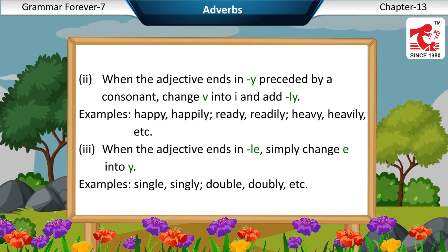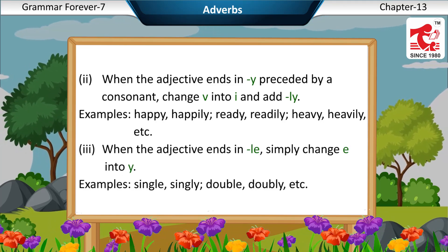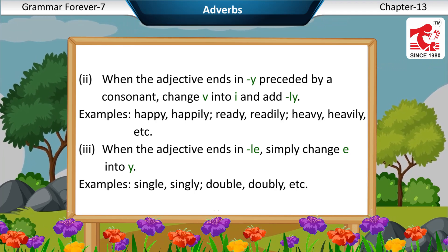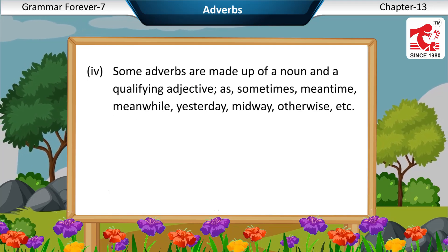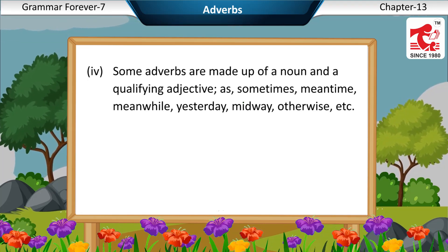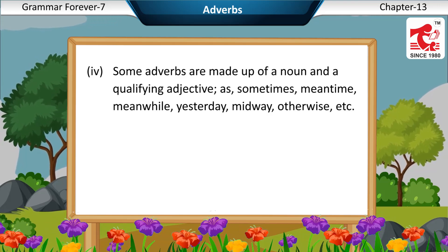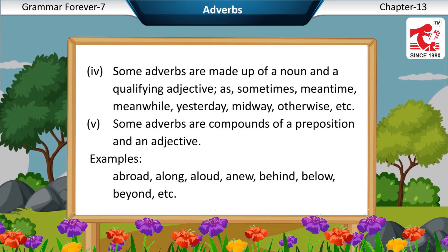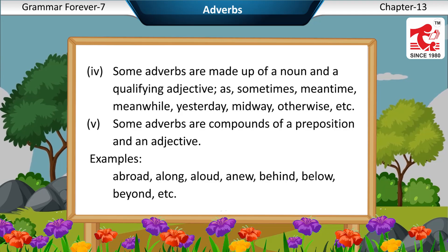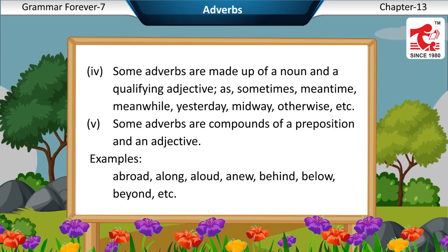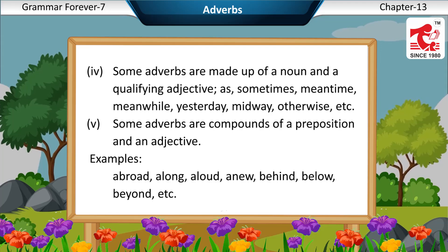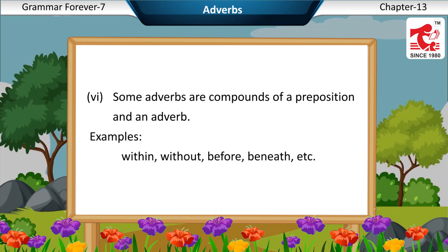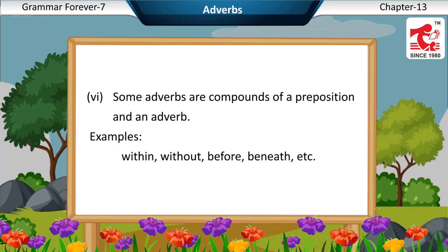Third, when the adjective ends in -LE, simply change E into Y. Examples: single — singly; double — doubly, etc. Fourth, some adverbs are made up of a noun and a qualifying adjective, such as: sometimes, meantime, meanwhile, yesterday, midway, otherwise, etc. Fifth, some adverbs are compounds of a preposition and an adjective. Examples: abroad, alone, anew, behind, below, beyond, etc. Sixth, some adverbs are compounds of a preposition and an adverb. Examples: within, without, before, beneath, etc.